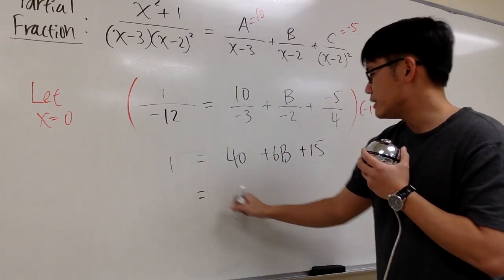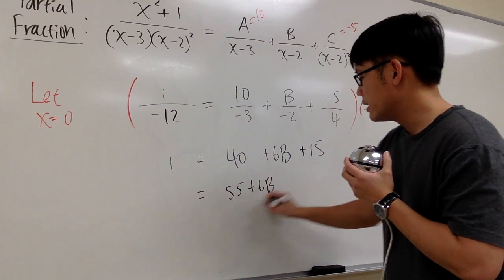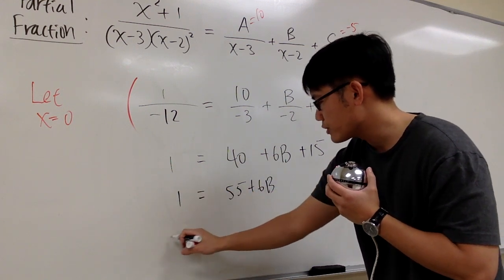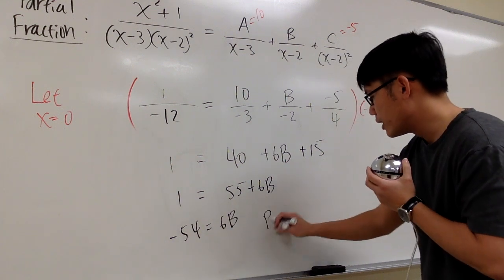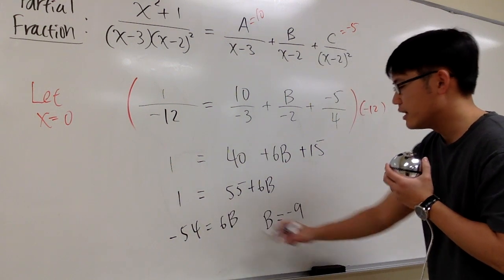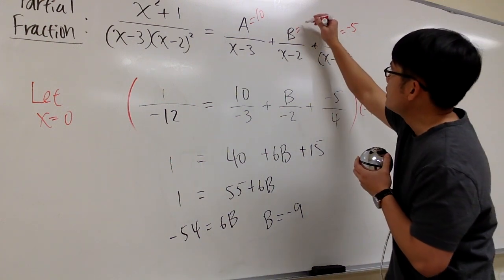And you see that this is 55, so we have 55 plus 6B equals 1. Of course we can subtract, so we get negative 54 equals 6B. And that will tell you B will be negative 9 after you divide both sides by 6. So we got it, B will be negative 9.